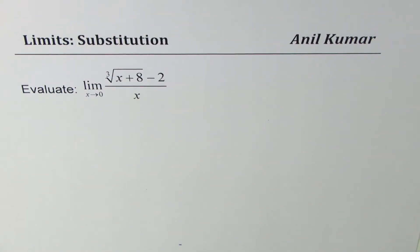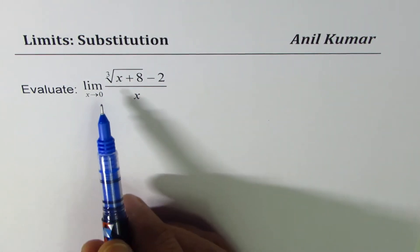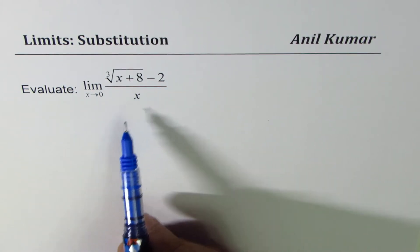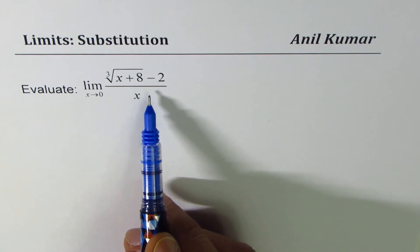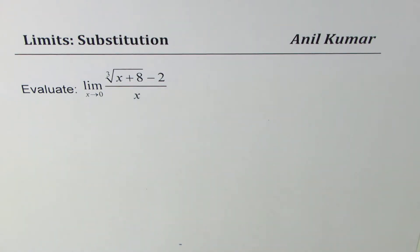I'm Anil Kumar. Now let's move forward with finding limits. In this particular video we will learn the technique of variable substitution to find limits. We'll evaluate the limit when x approaches 0 for cube root of (x + 8) minus 2, divided by x. You could solve this by rationalization, but that would be tedious.